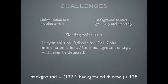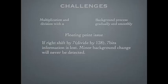One of the challenges we met is the floating point issue. We have to do multiplication and division with alpha, and the background process should be gradual and smooth. But since we are not using a DSP processor, we do it all in fixed point, and that resulted in a very big precision loss. So if we right-shift by 7, all 7 bits will be lost. And if the background changes less than 7 bits, then it will never detect it.